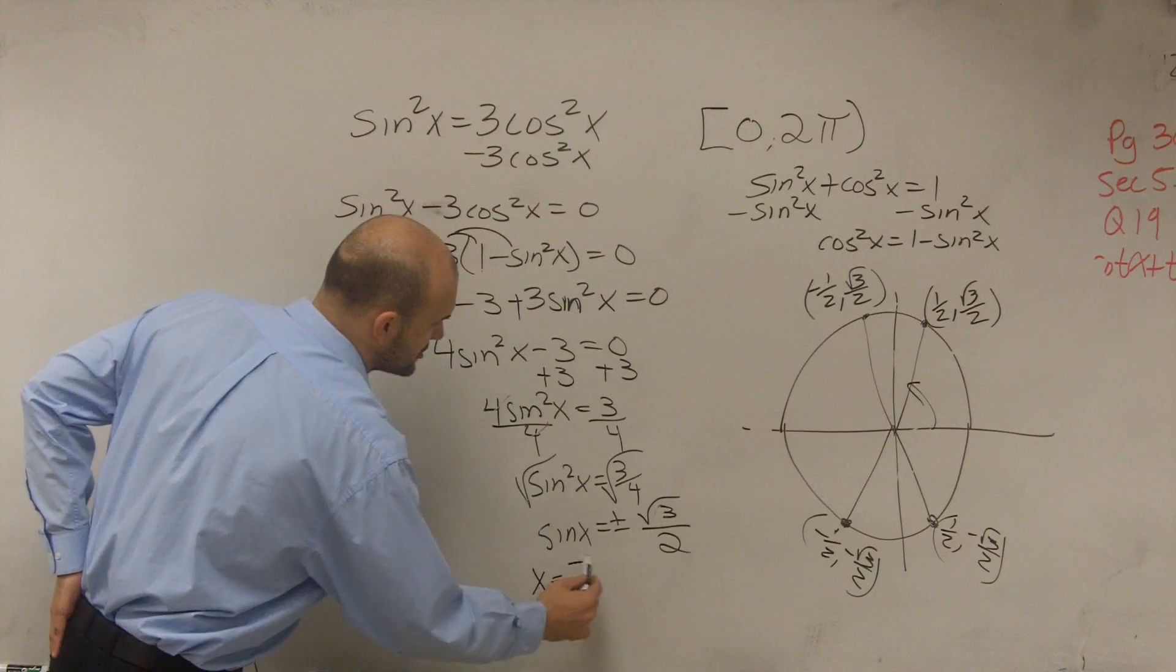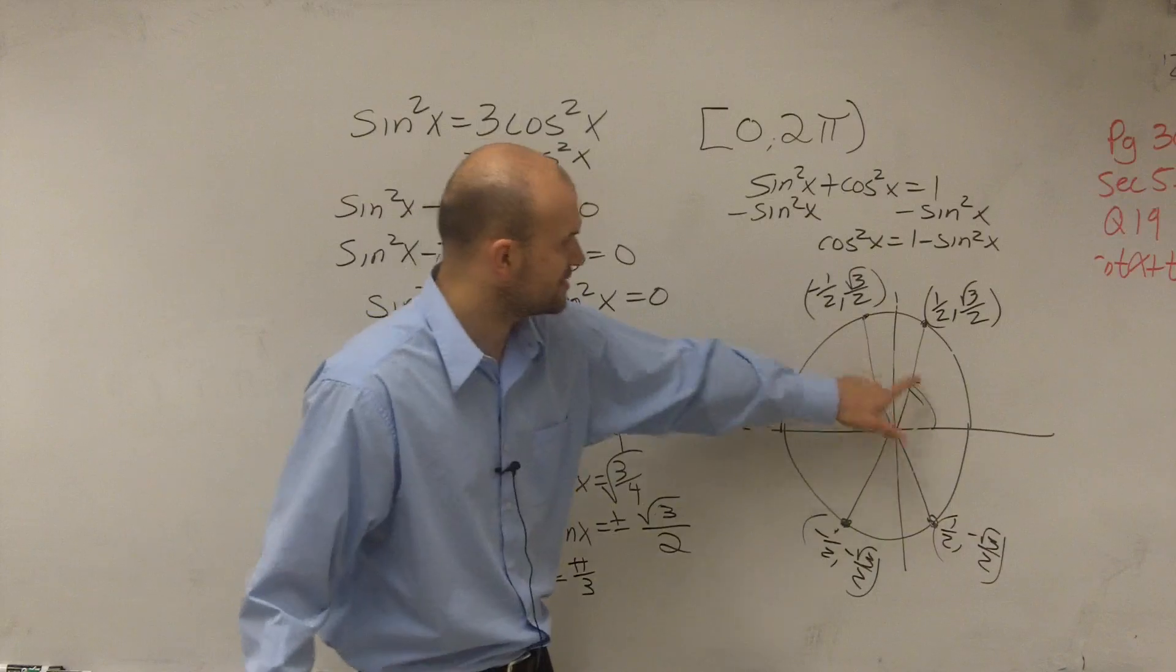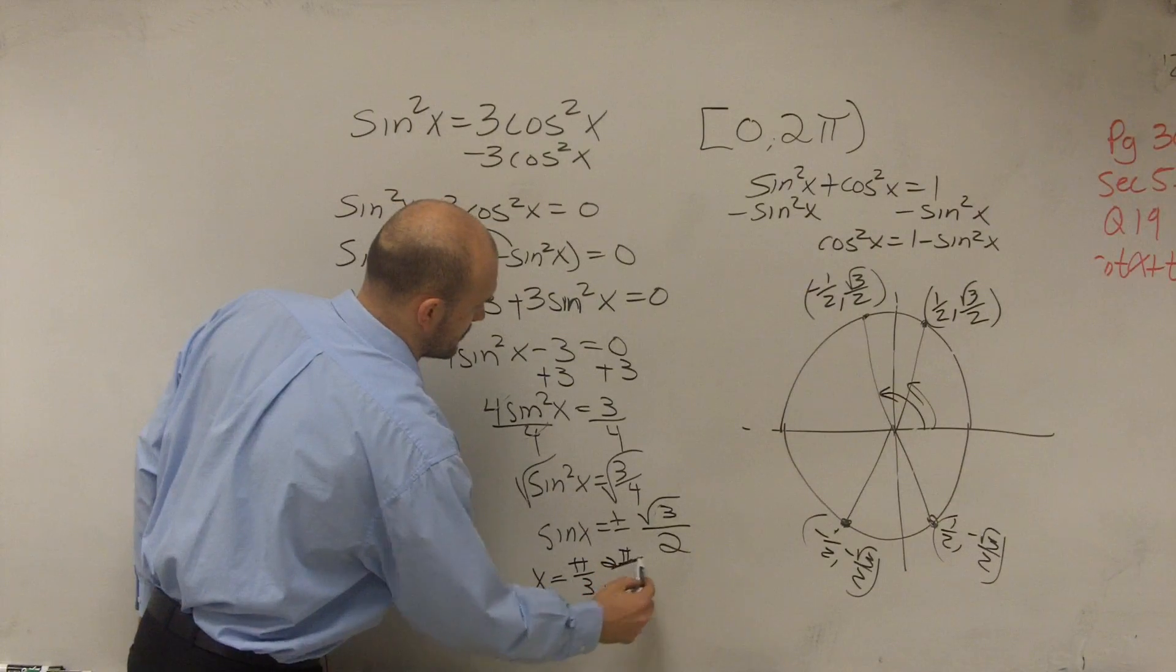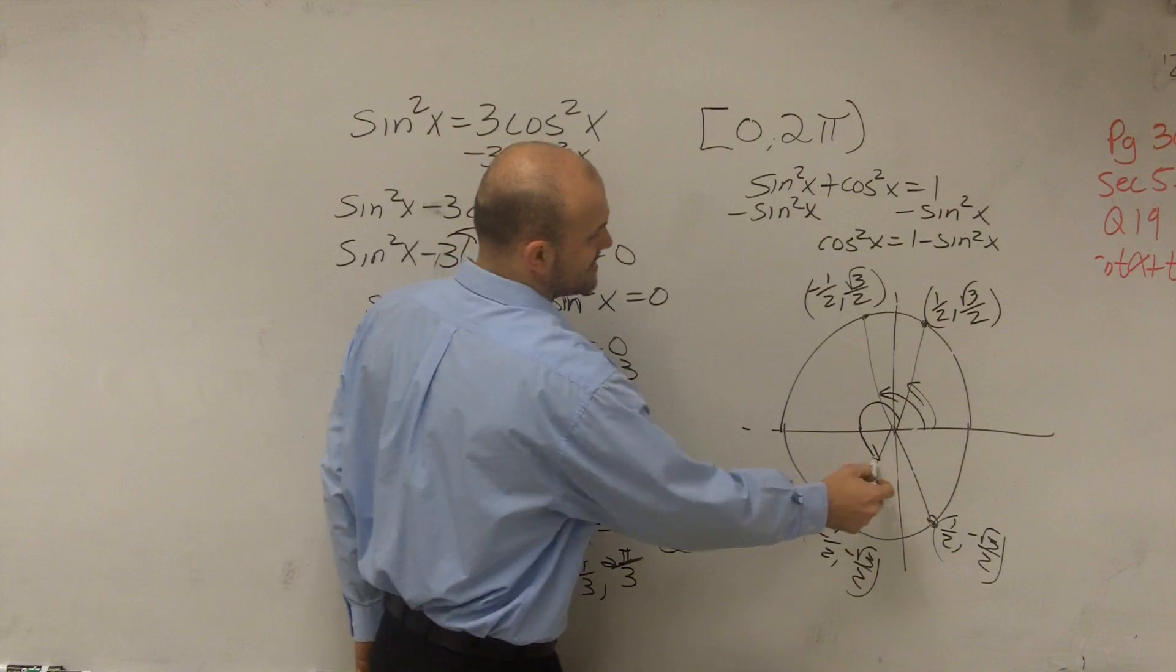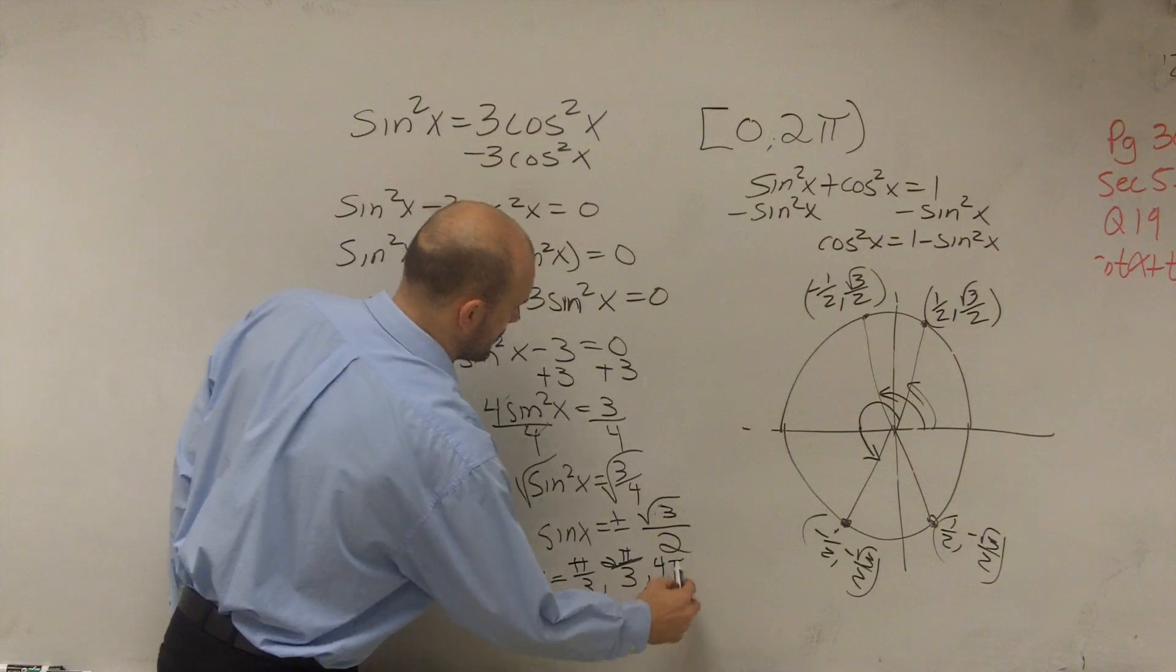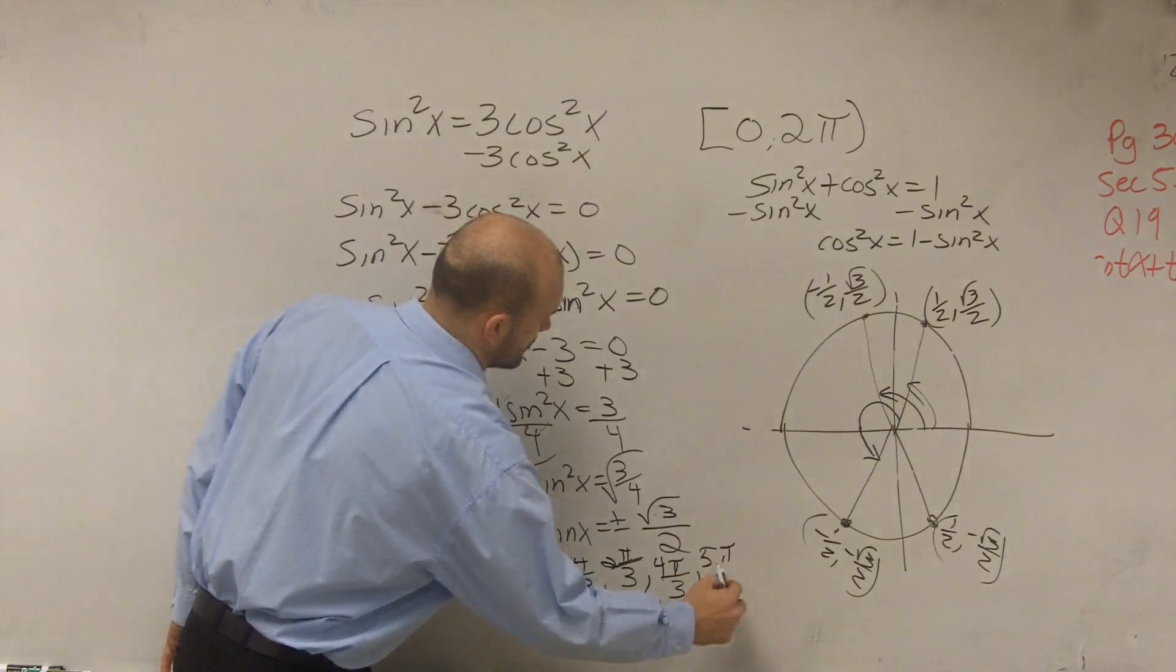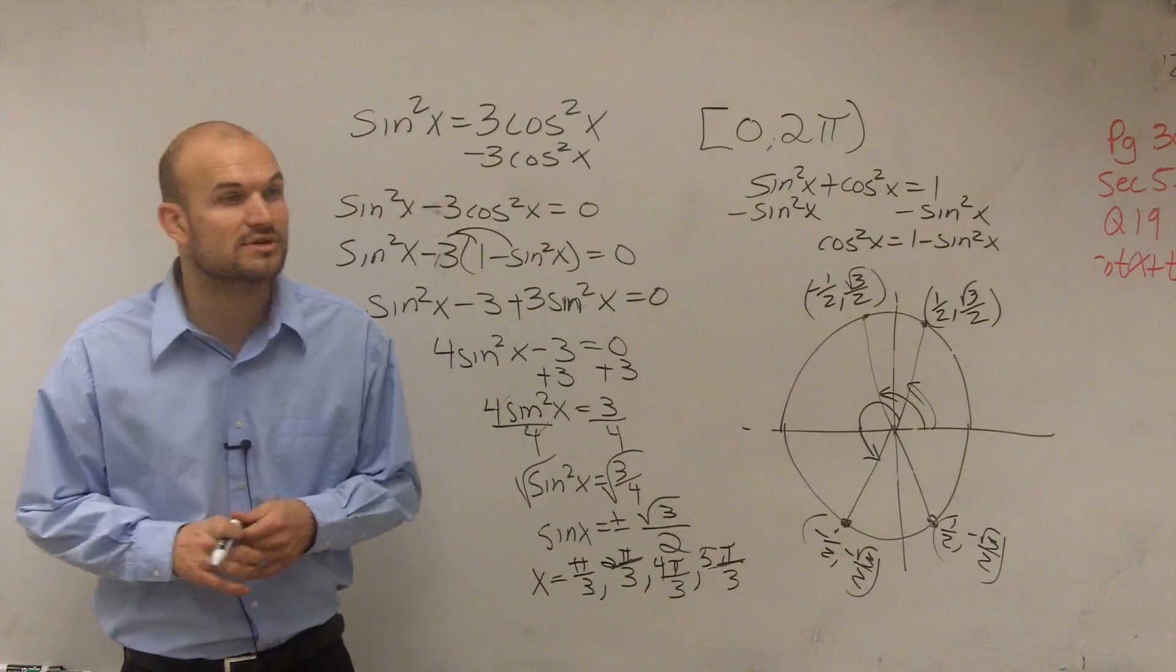So therefore I can say x is going to be π over 3. Then I look and see what this angle is. This angle is 2π over 3. Here would be 3π over 3. So this next angle we know is 4π over 3. And the last one right here is going to be 5π over 3. So for this problem, on the interval of 0 and 2π is going to have four separate solutions.